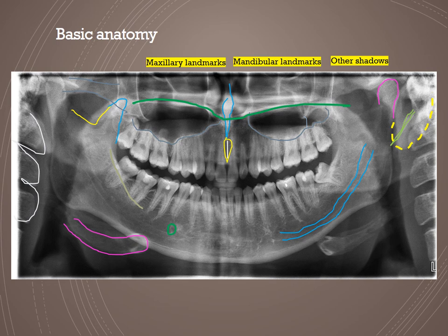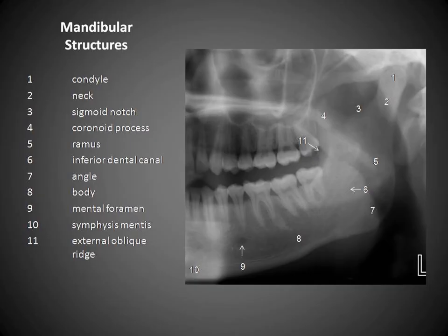It's important to delineate the difference between the anatomical landmark and a pathology or finding. Looking in detail at mandibular structures: the condyle, neck, sigmoid notch, coronoid process, ramus, inferior dental canal (mandibular canal), angle of the mandible, body of the mandible, mental foramen, symphysis menti, and the external oblique ridge.